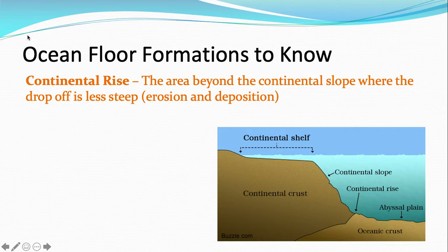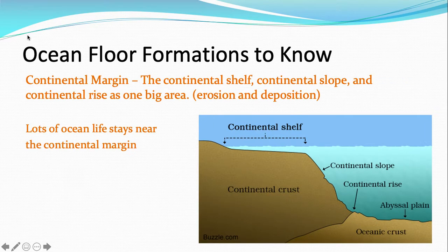All three of these things together are called the continental margin. The continental margin is the continental shelf, continental slope, and continental rise as one big area, and the way it's formed is erosion and deposition. Lots of ocean life sticks near to the continental margin, in part because that's where the most sunlight is.